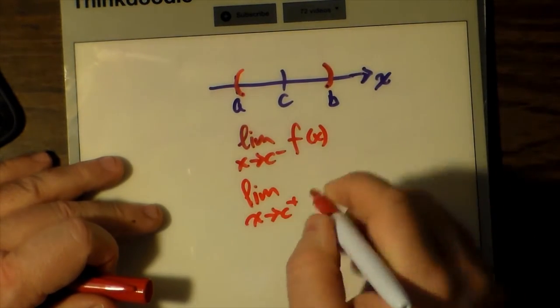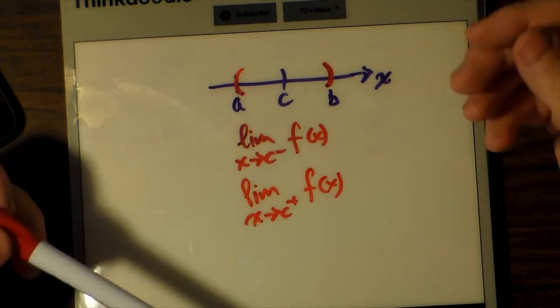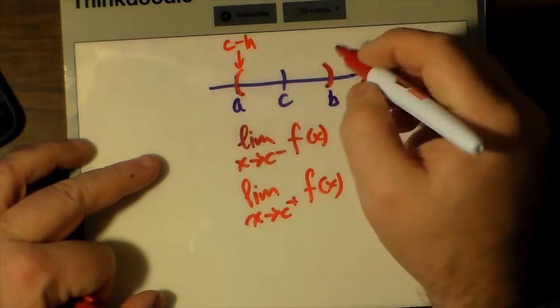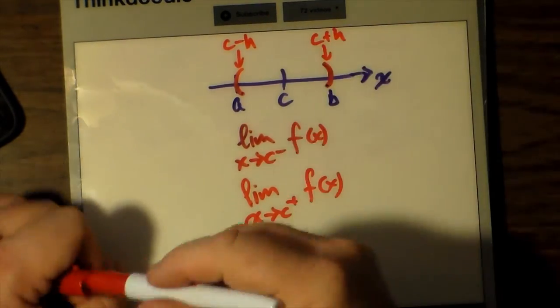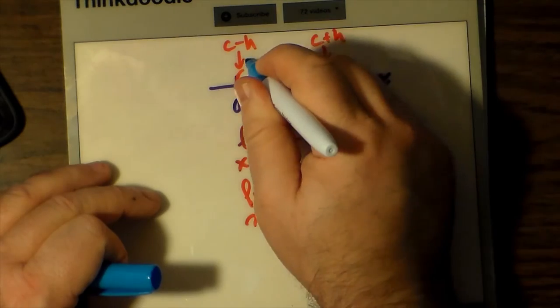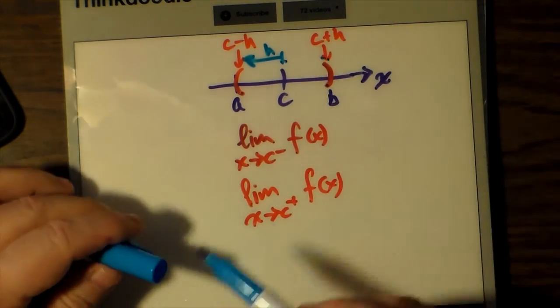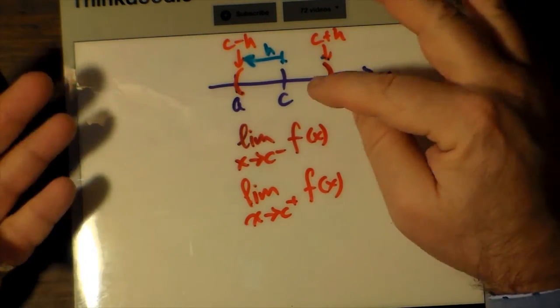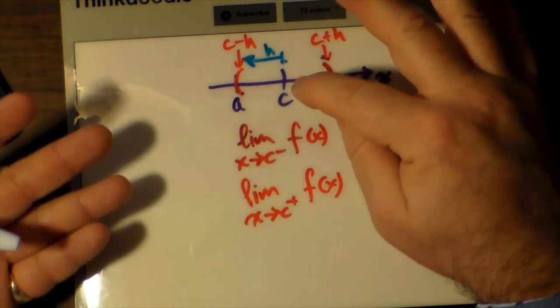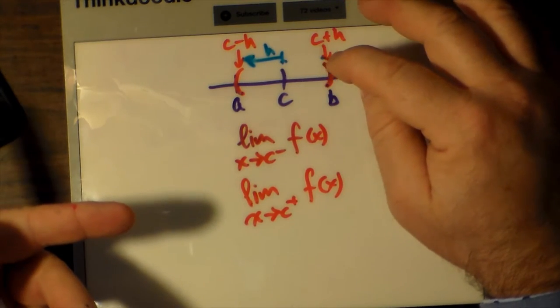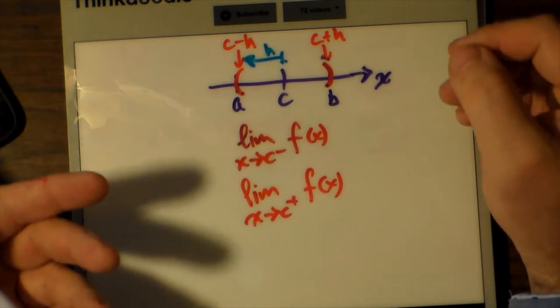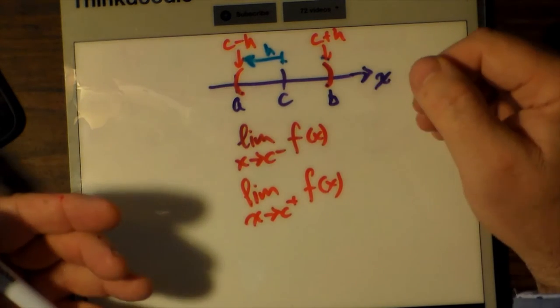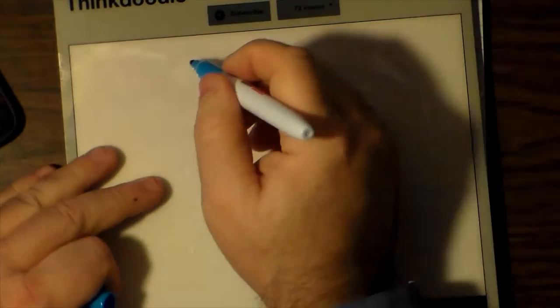To study the behavior of a function f at c, the idea is to evaluate the limit as x approaches c from the left and the limit as x approaches c from the right of f of x. Most often, c lies exactly in the middle between a and b in what is called a symmetric neighborhood. To make it symmetric, we can pick a number h so that the interval a, b becomes the interval c minus h to c plus h, guaranteeing that c lies smack in the middle.